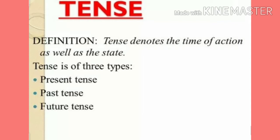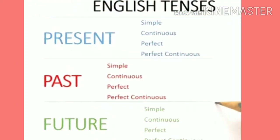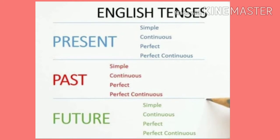We can divide the tenses into three parts: present tense, past tense and future tense. Past means jho ho gaya, present means jho abhi ho raha hai and future means jho abhi ho ga. Now these tenses have been further divided into four more parts: simple or indefinite tense, continuous or progressive tense, perfect tense and perfect continuous tense.